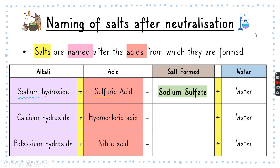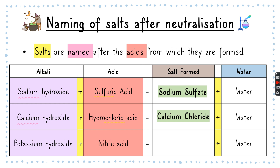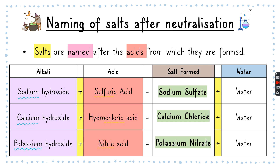Let's try out calcium hydroxide and hydrochloric acid. We take the first name calcium, and then from the acid name chloric, which becomes chloride. So the salt formed is calcium chloride plus water. Potassium hydroxide plus nitric acid: we take the name potassium and nitric from the acid, so it's potassium nitrate plus water.